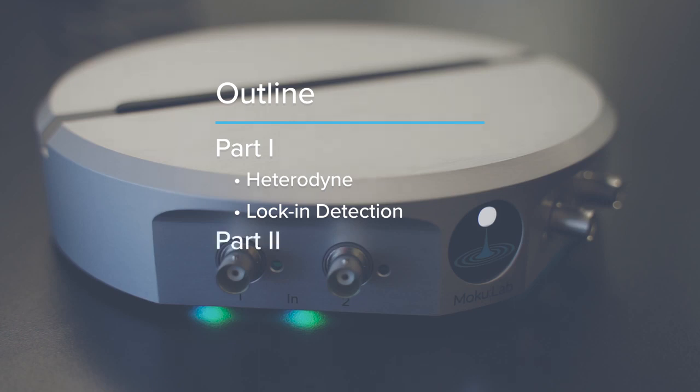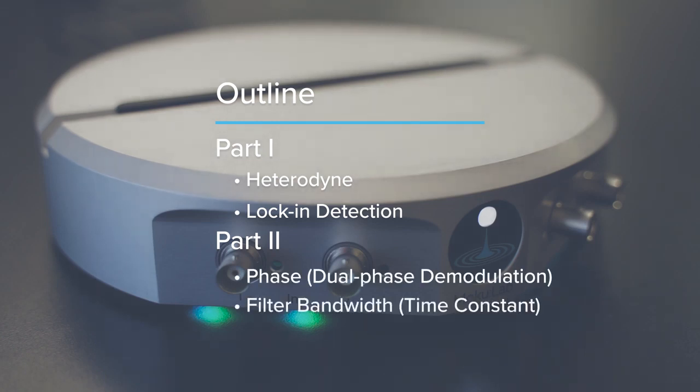In part 2, we will discuss two important parameters of a lock-in: phase and filter bandwidth. Let's start with phase.